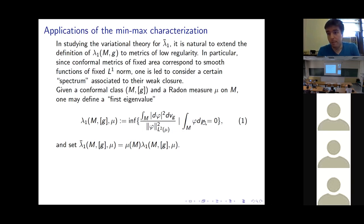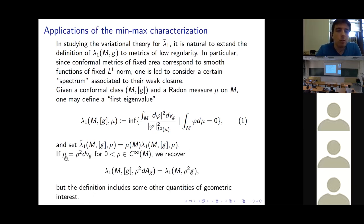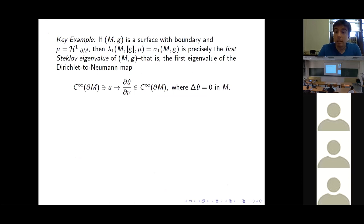Normalizing by the mass of the measure gives scale-invariant eigenvalues, and a min-max characterization works for higher eigenvalues as well. When μ is ρ² times the volume measure of a fixed metric, we recover the classical eigenvalues. An especially important example: if M has boundary and μ is the length measure of that boundary, then this first eigenvalue is exactly the first Steklov eigenvalue — the first eigenvalue of the Dirichlet-to-Neumann map, which takes a boundary function to the normal derivative of its harmonic extension.